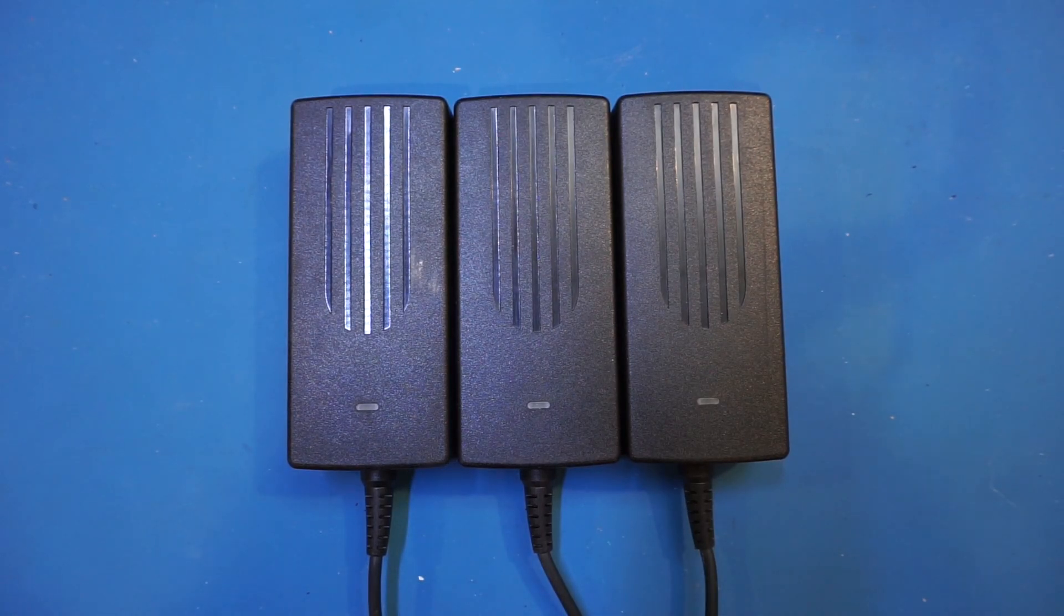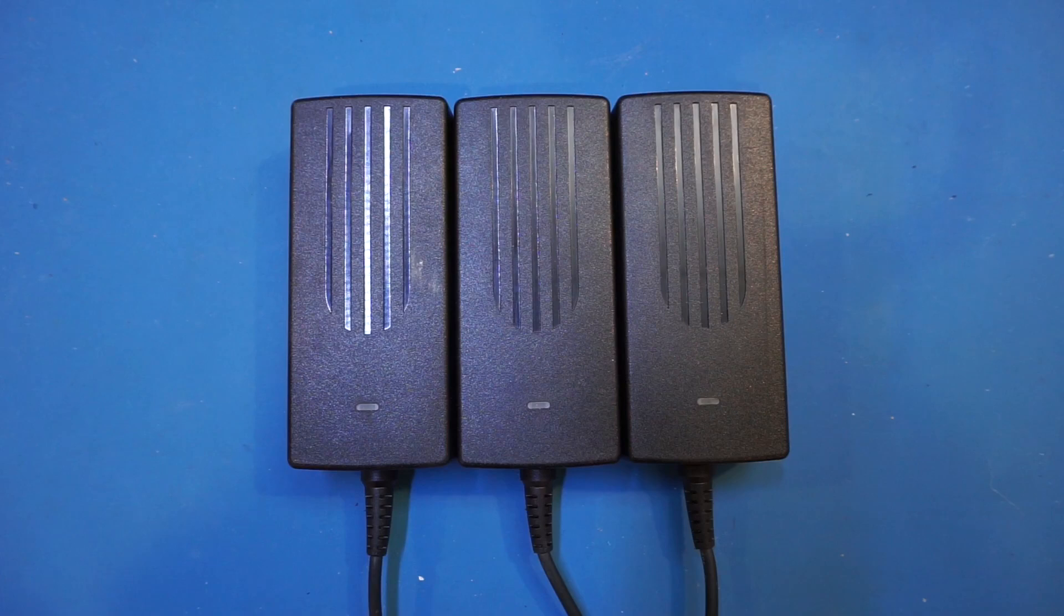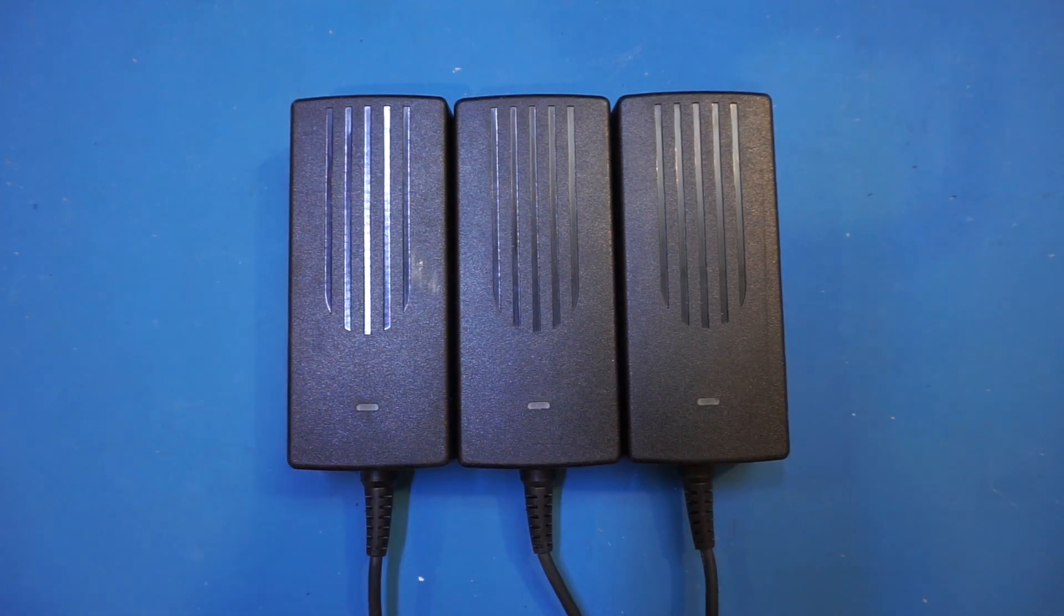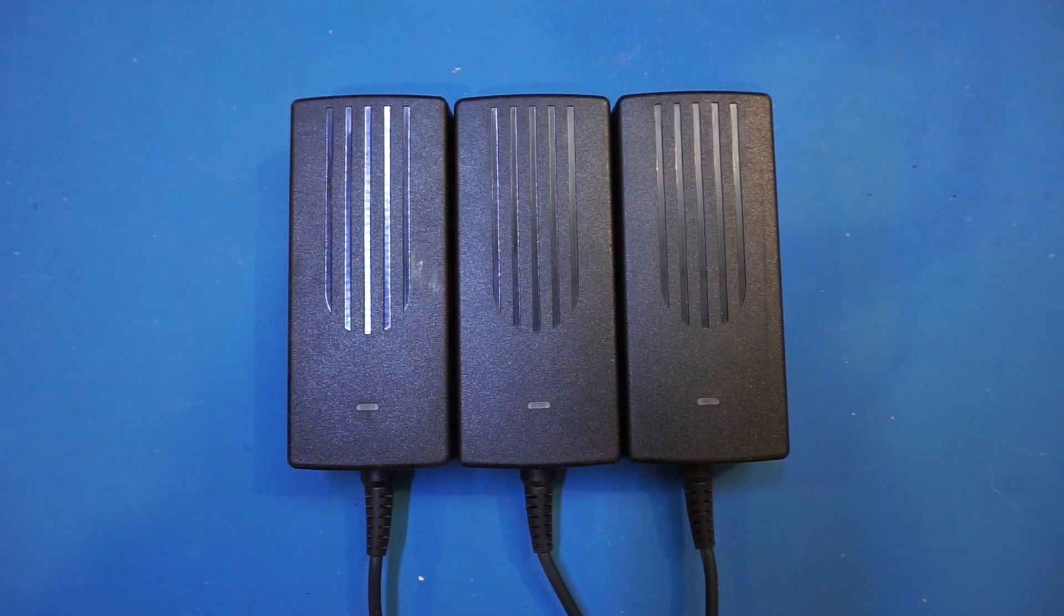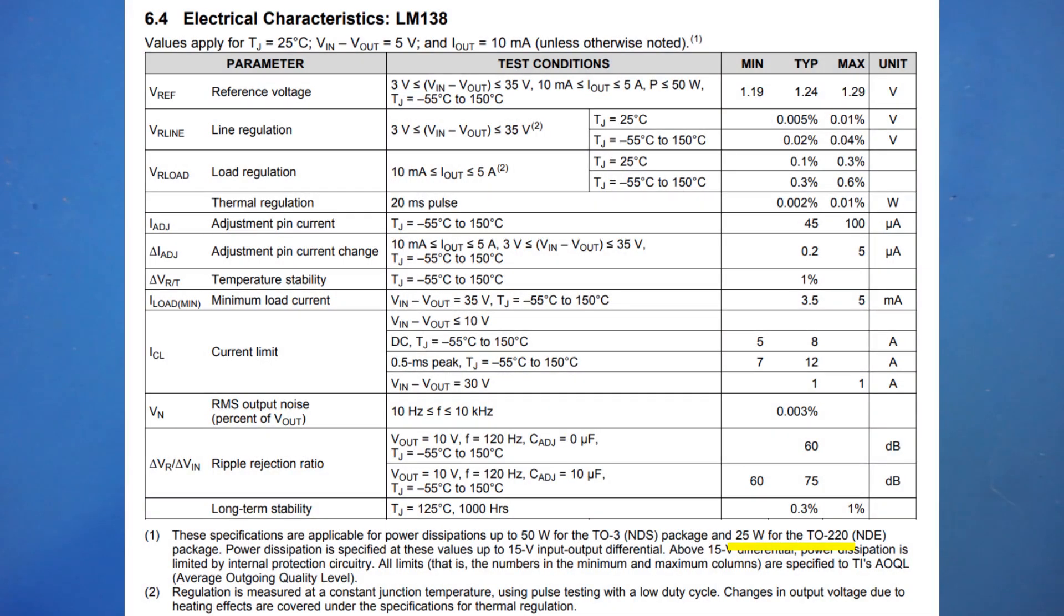The reason I wanted to use a linear regulator as the output stage is mainly for the superior power supply ripple rejection, or PSRR, compared to a switching power supply. This would significantly reduce the switching noise at the output. The linear regulator I have in mind is an LM338, which can output 5A but can only dissipate 25W continuously.